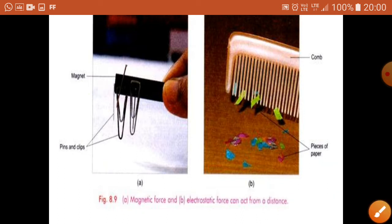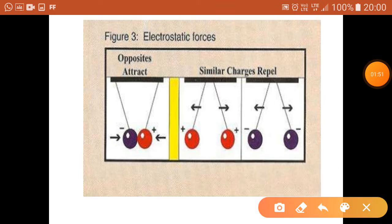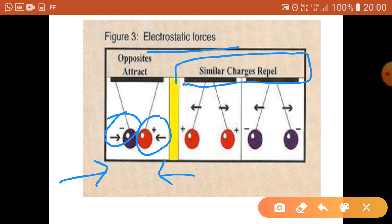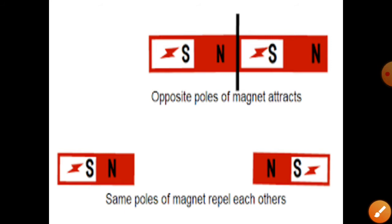These two are examples of non-contact forces. Now, for electrostatic force: opposite charges attract — a negatively charged body and a positively charged body attract each other. But similar charges always repel — positive-positive repels, and negative-negative also repels, moving away from each other. Similarly, in the case of a magnet, opposite poles attract and same poles repel each other.